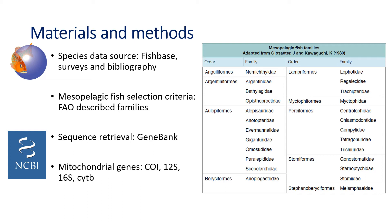A bibliographic review was also carried out as a check. To determine whether a species was mesopelagic, we chose the family criteria described by the FAO in 1980, which identified 30 mesopelagic families, although taxonomic changes have grouped them into 25 today. Once the species list was created, sequence availability was analyzed in GenBank. The genes selected were the most common in metabarcoding studies: cytochrome oxidase subunit 1 (COI), 12S and 16S ribosomal RNA, and cytochrome B — all four are mitochondrial genes, which are most commonly used in metabarcoding for being more abundant.